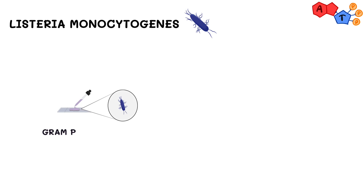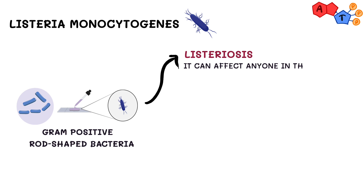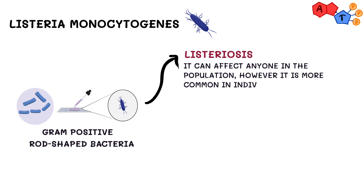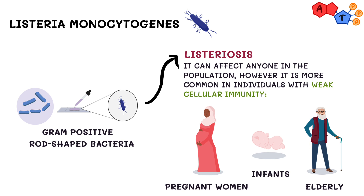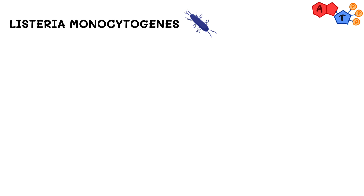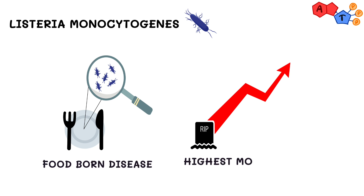Listeria monocytogenes is a gram-positive rod-shaped bacteria that is responsible for causing the infection Listeriosis. The disease can affect anyone in the population. However, it's more common in individuals with weak cellular immunity like pregnant women, infants, and elderly. Although the number of cases involving Listeria has decreased in recent years and it's not the most common foodborne illness, it's still quite important to know about, as it's linked to the highest mortality rate.